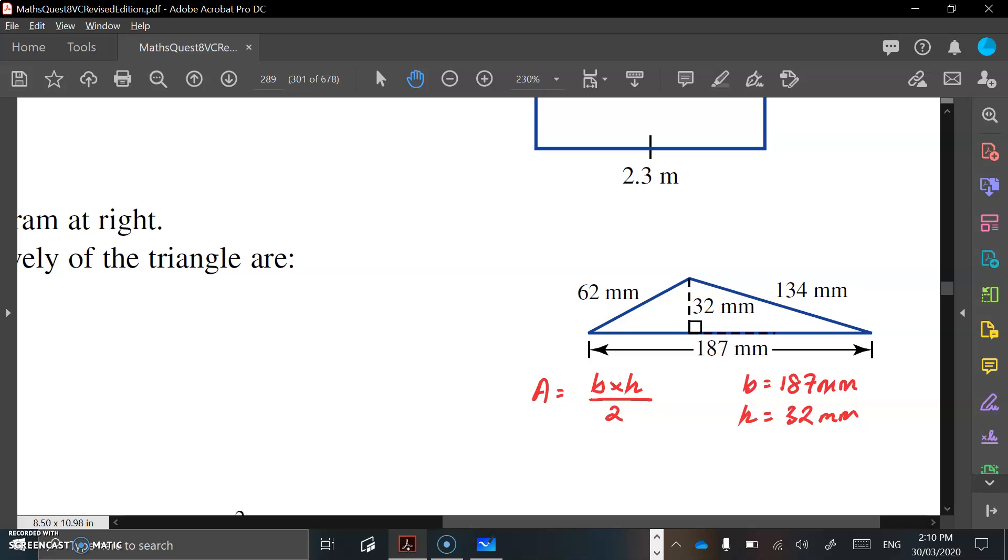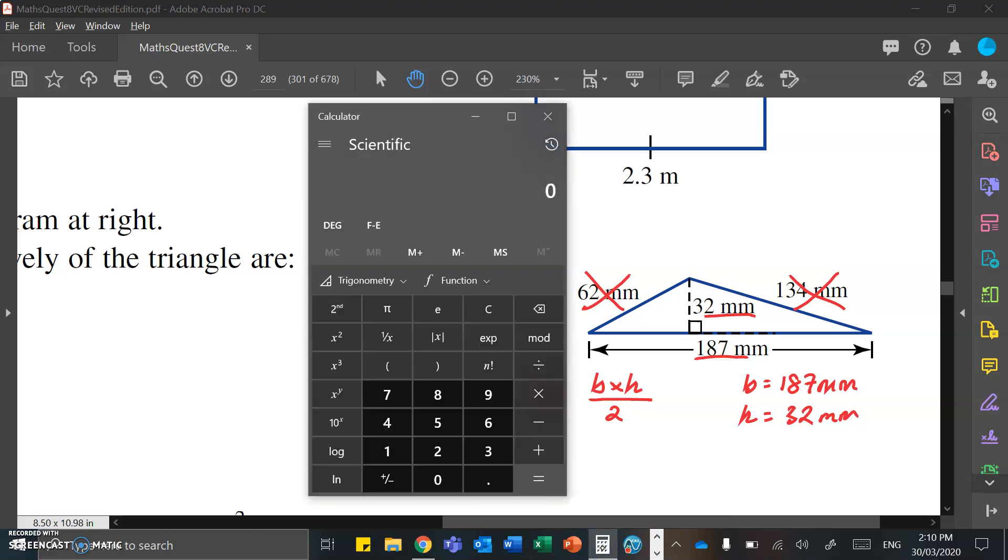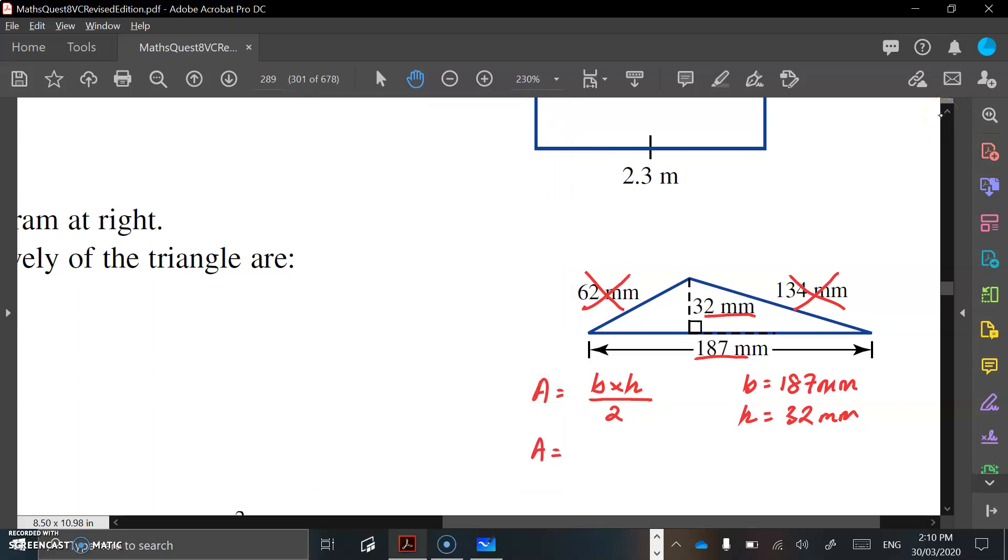Now notice that with these two additional numbers on the side, they're relevant, they're there to probably confuse you, but we really only need one and two numbers. So on your calculator, let's put those two together. 187 times 32, and because we need to halve that, we're going to divide it by 2, which gives us 2992. Area is going to be 2992 millimeters squared.